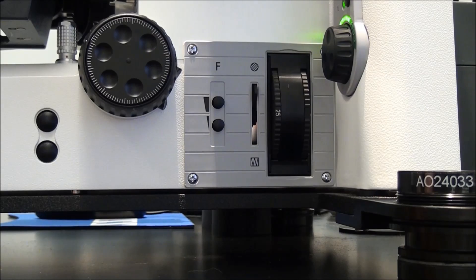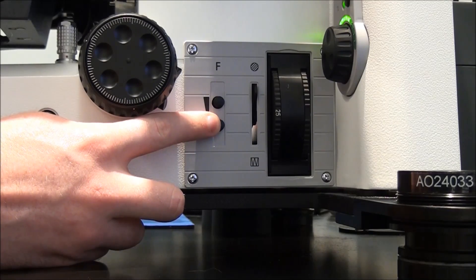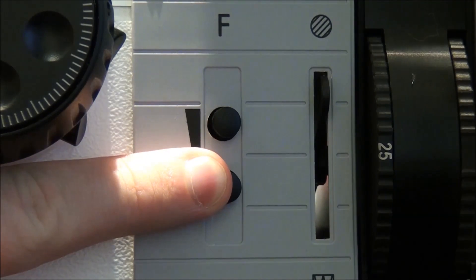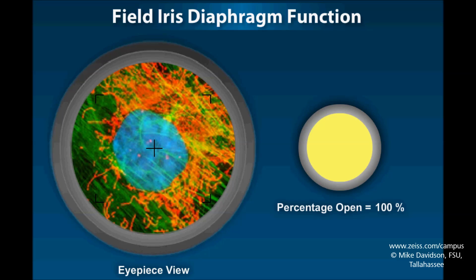Step 8: Close the field diaphragm until the blades, in focus or not, come into the field of view. Locate the control marked F near the base of the stand. Roll the wheel downward or press and hold the lower button. The field diaphragm controls the beam diameter of your lighting.